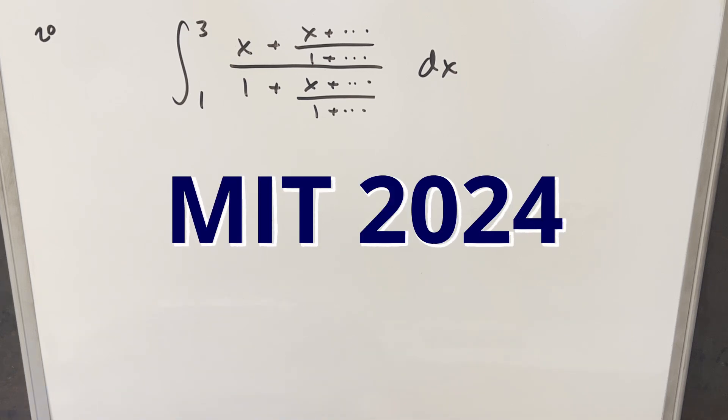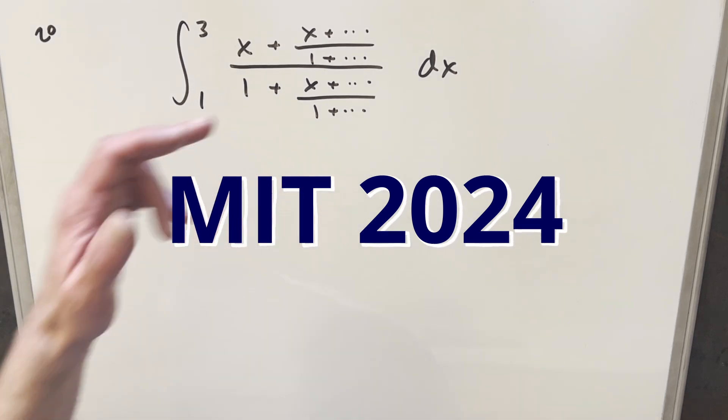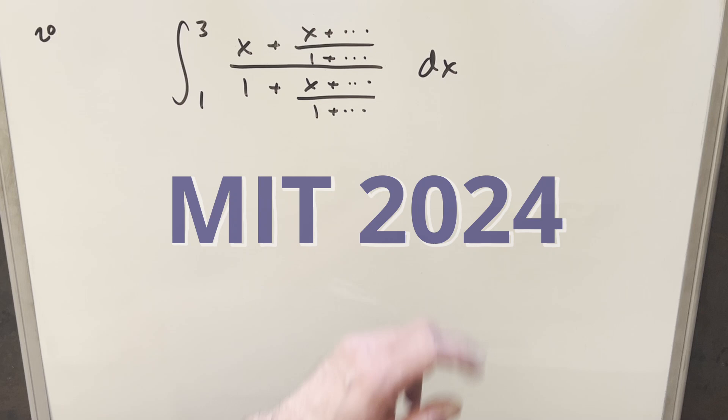Okay, we have here today another interesting integral from the MIT integration bee from 2024. This one's problem 20. We have the integral from 1 to 3 of this kind of infinitely repeating expression, dx.